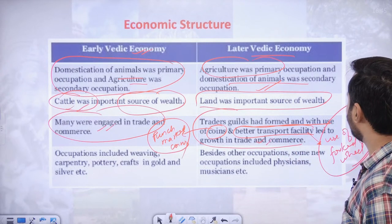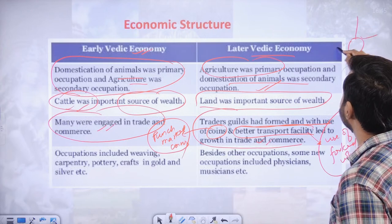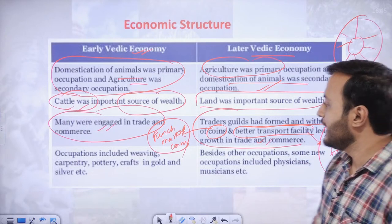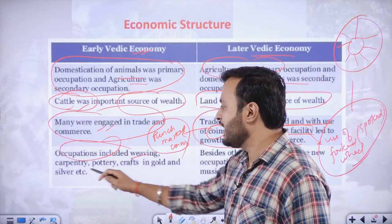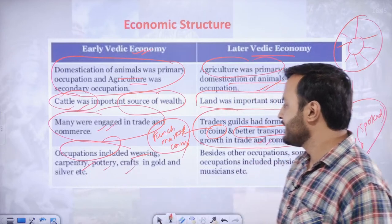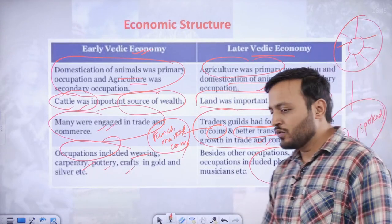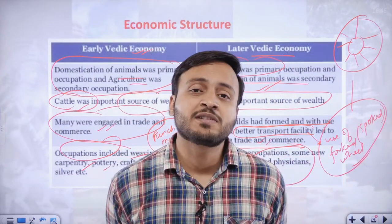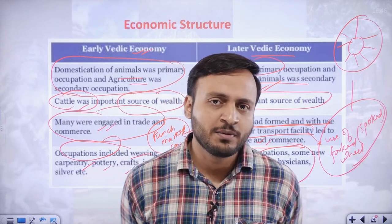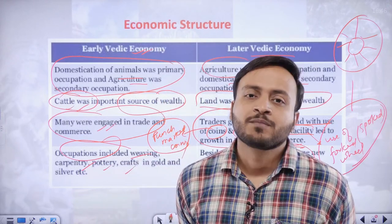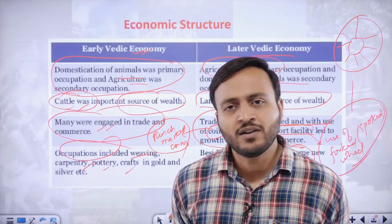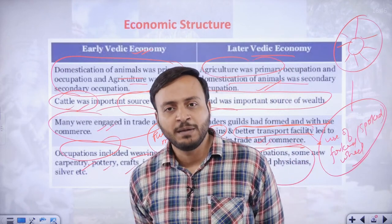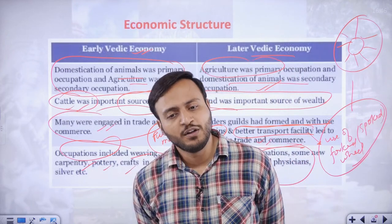In the early Vedic period, other occupations included weaving, carpentry, pottery, and craft. In the later Vedic period, new occupations emerged particularly in trade and commerce and various types of services — accountancy services, writing services — all these had been introduced as new changes.